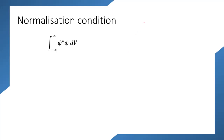Now let us find the normalization condition. Our wave equation is ψ = A sin(nπx/L). Let us find the constant A using the normalization condition: ∫ from −∞ to ∞ of ψ* ψ dV = 1. This means that inside the entire universe, the probability of finding a particle must equal 1.